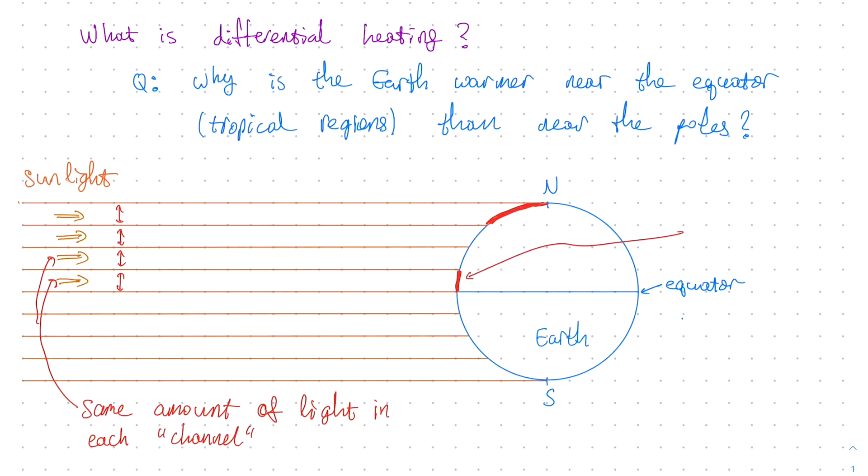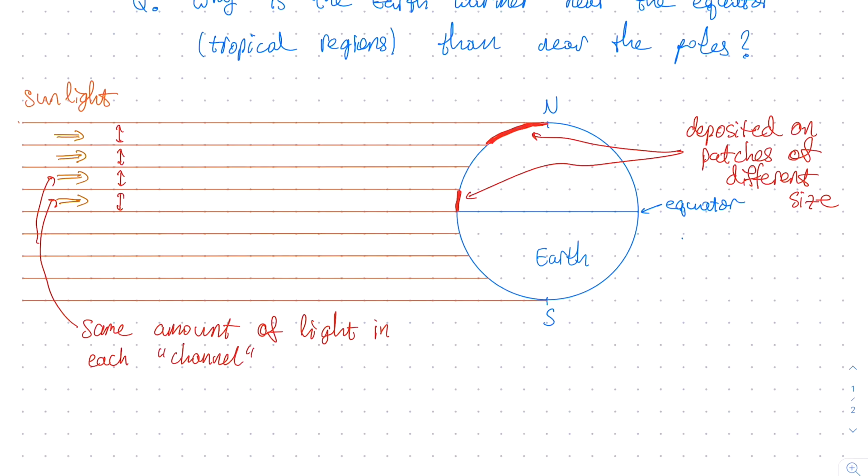In both cases, near the equator and near the pole, the amount of sunlight deposited into the outlined patch is the same, but the size of the patches are different. Therefore, the amount of sunlight per unit area that falls onto the Earth is different. Patches of the Earth near the equator are smaller, and therefore, they receive more sunlight per unit area. On the other hand, the patches near the poles are larger, and therefore, they receive less sunlight per unit area.